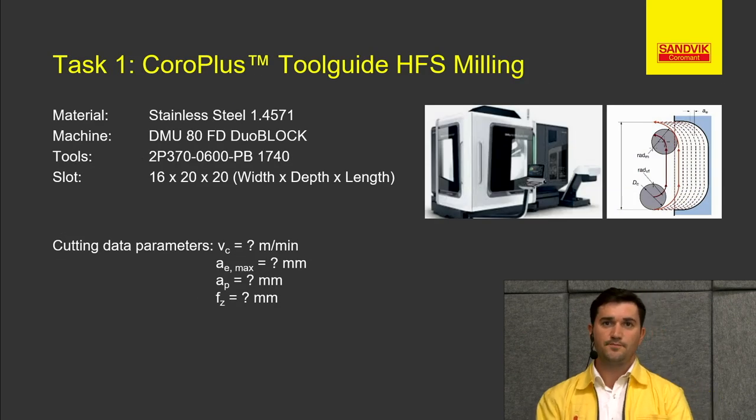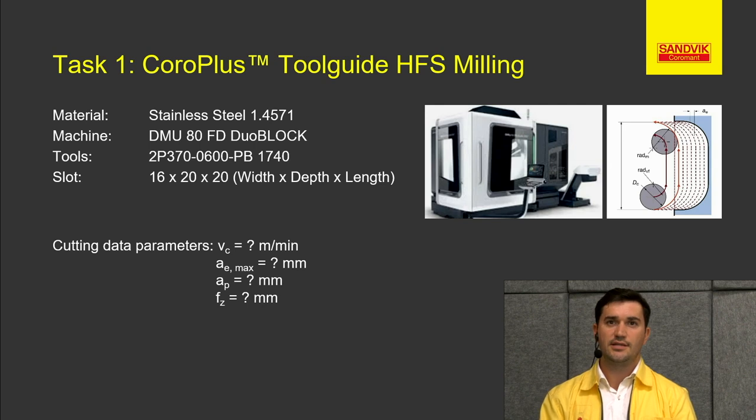Let's take a look at our example that we have chosen for today. We have stainless steel material and we would like to produce a slot that is 16mm width by 20mm depth and 20mm length. Let's see how ToolGuide can help us here.